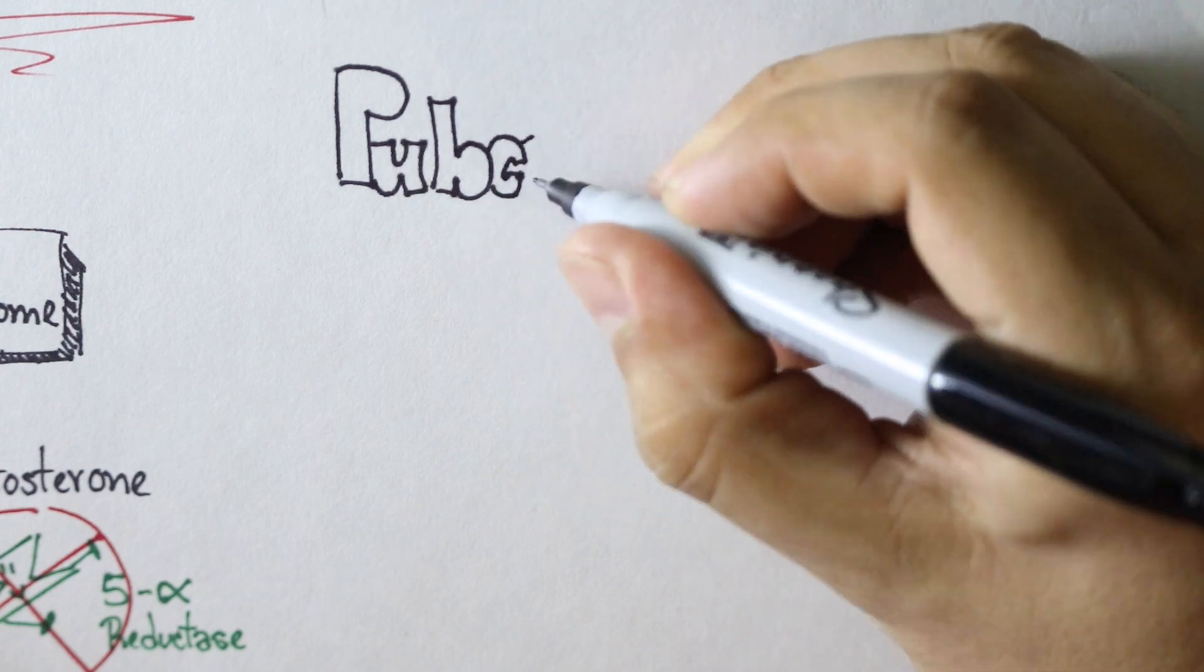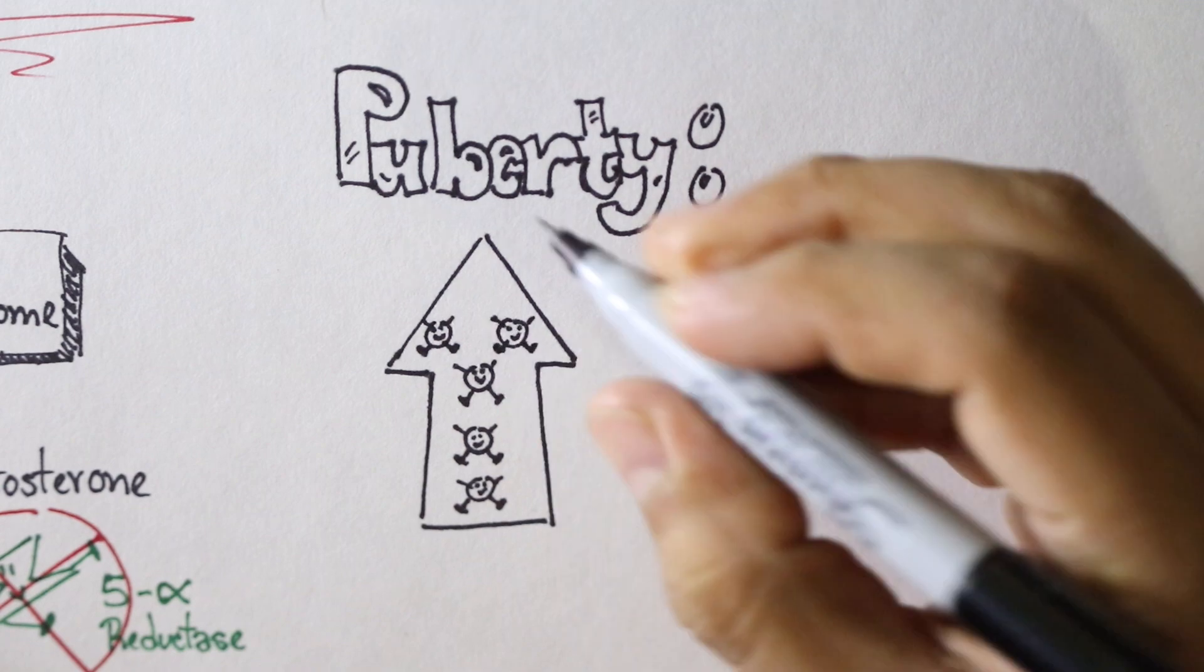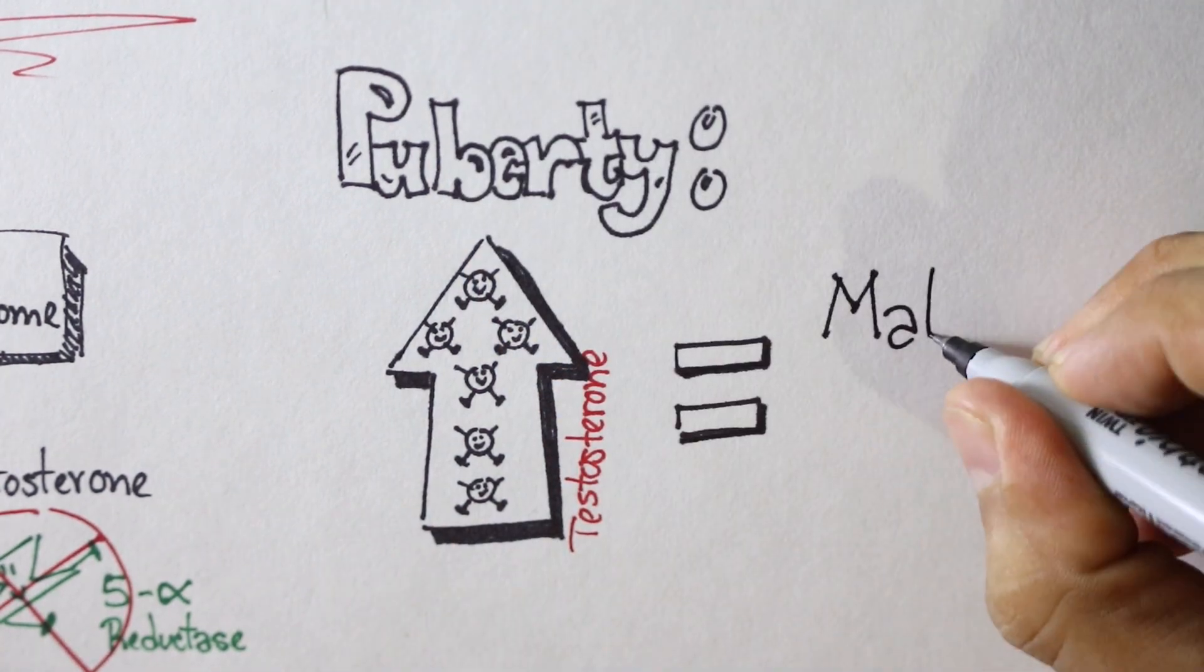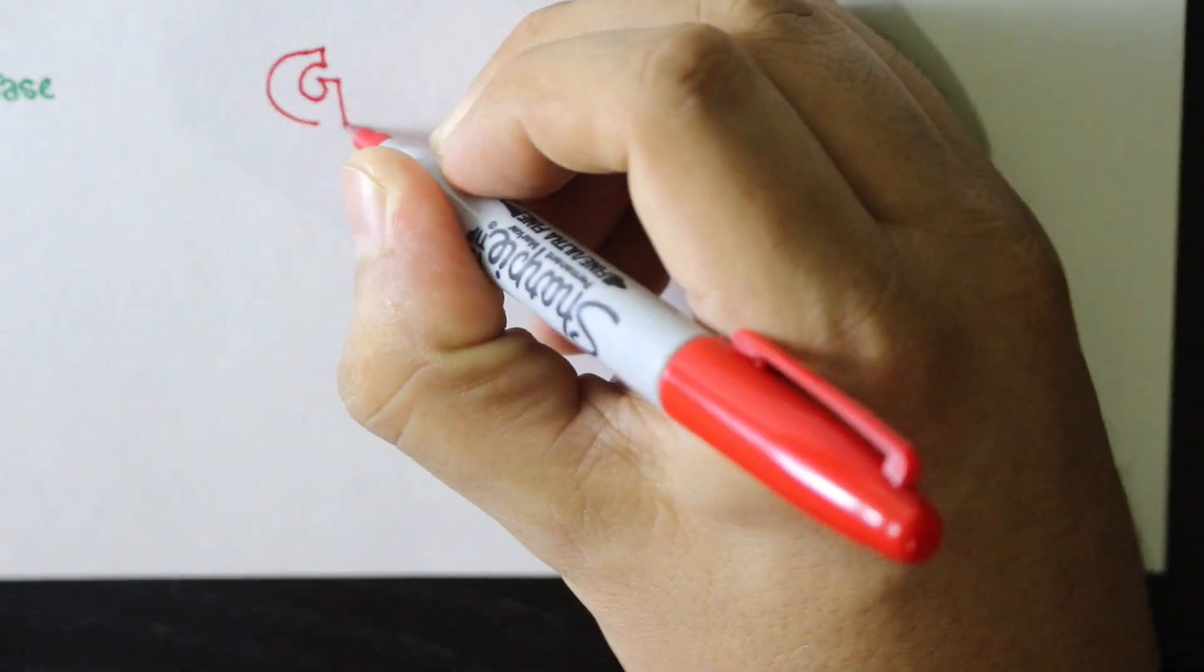During puberty, males experience a surge of testosterone. This dramatic increase of testosterone leads to the growth of male external genitalia, specifically a penis, from what was originally thought to be a clitoris.